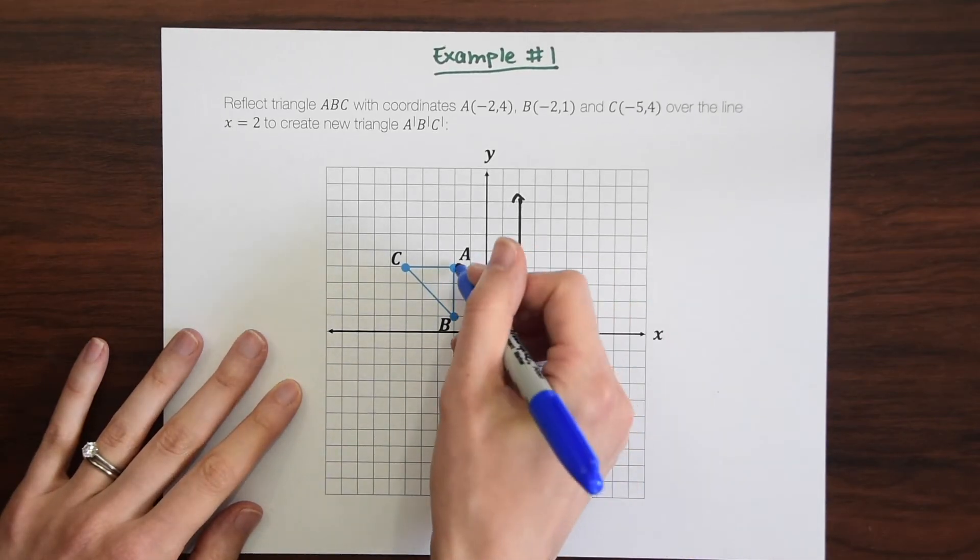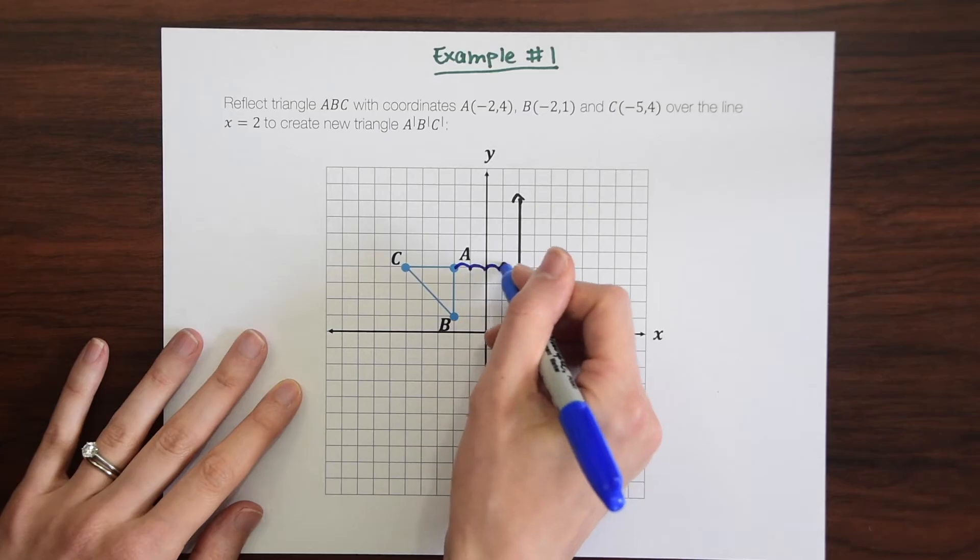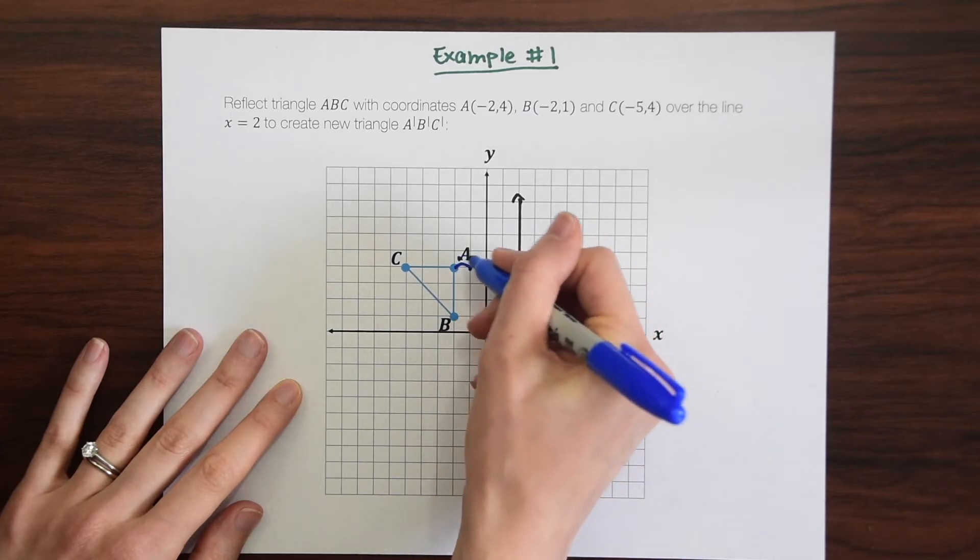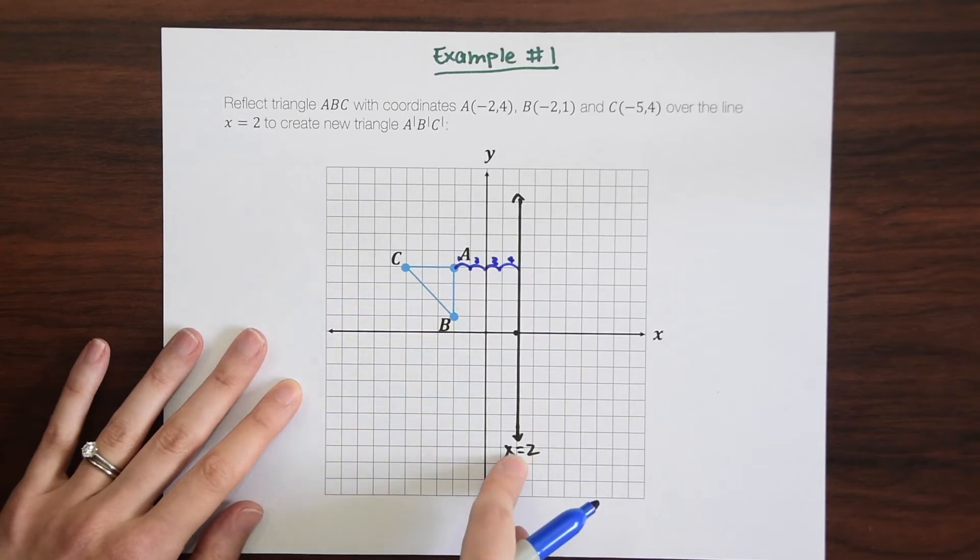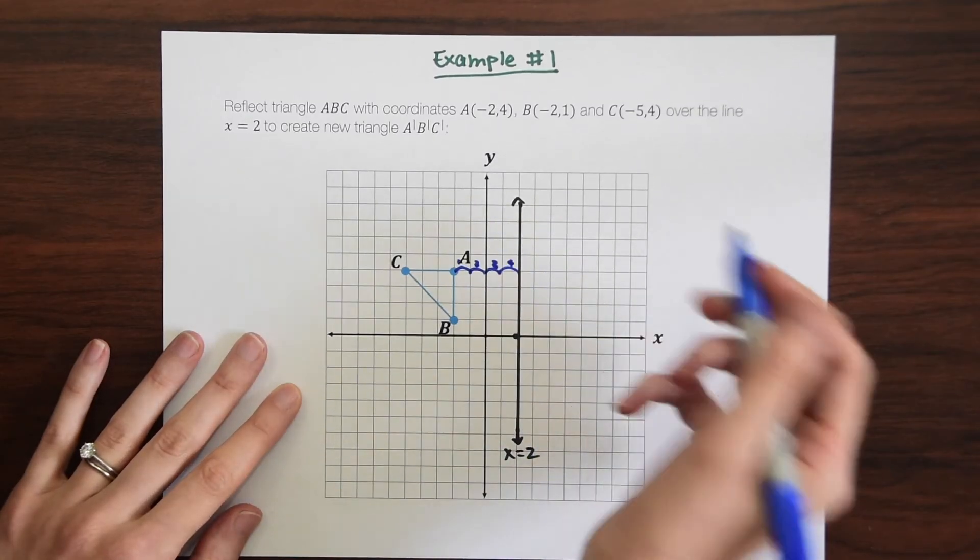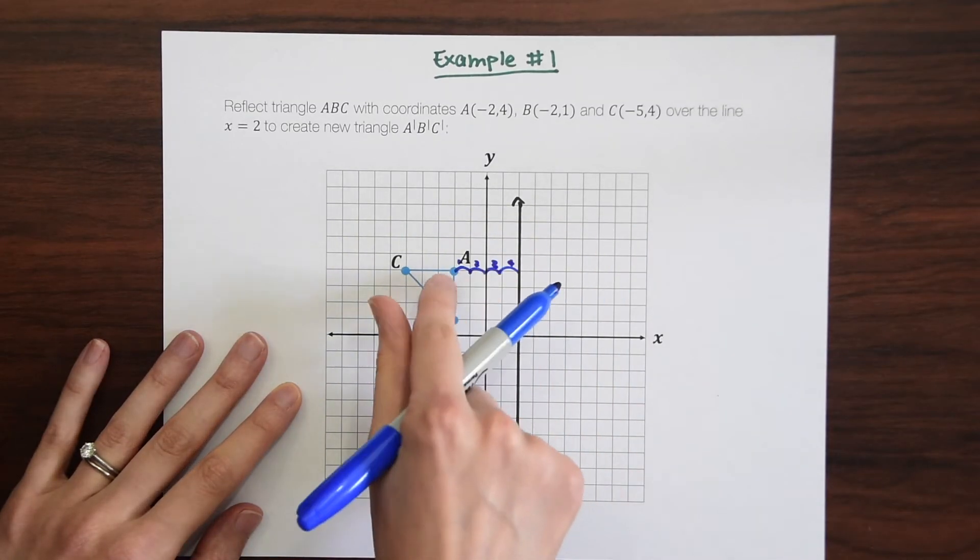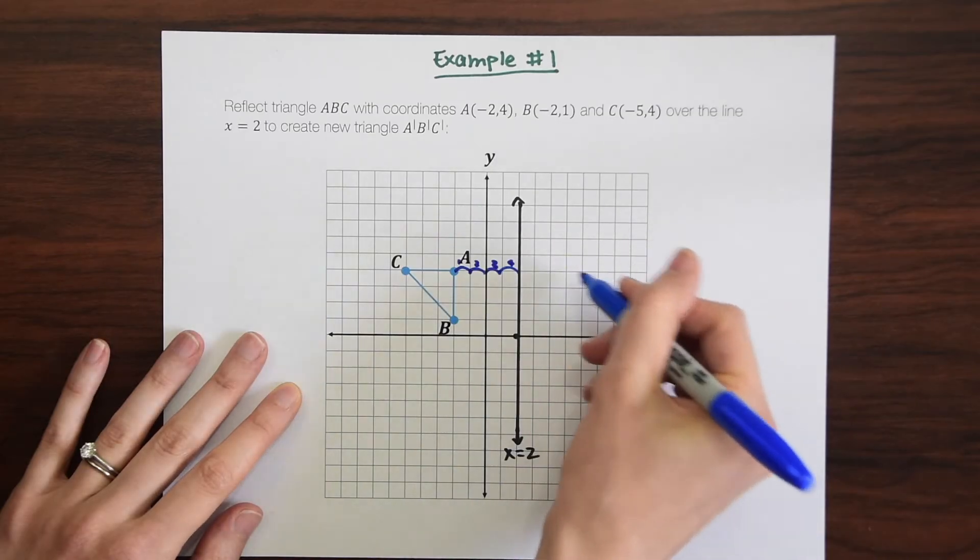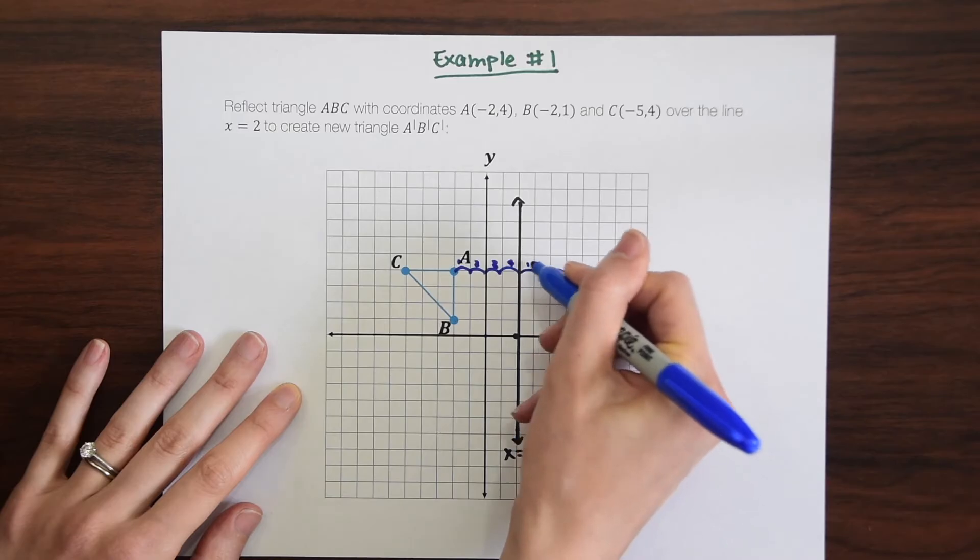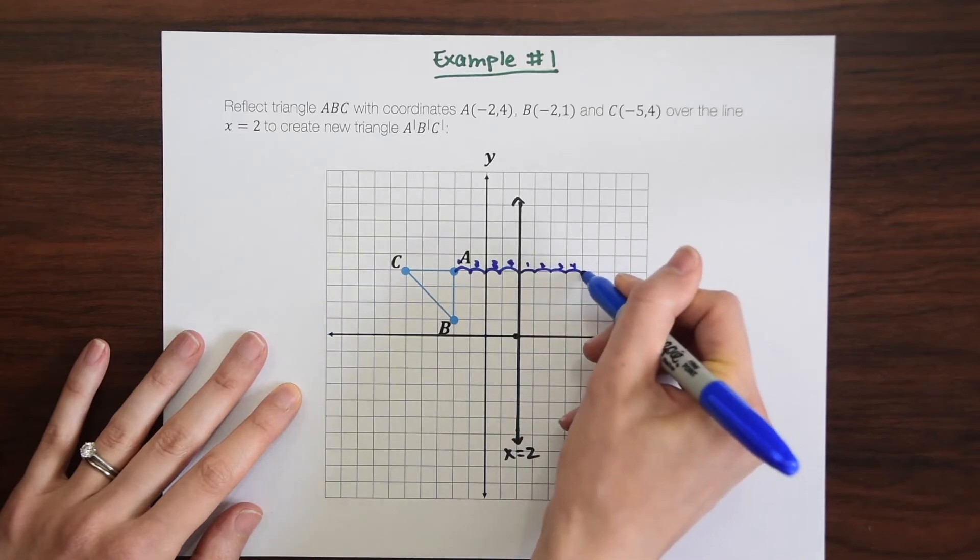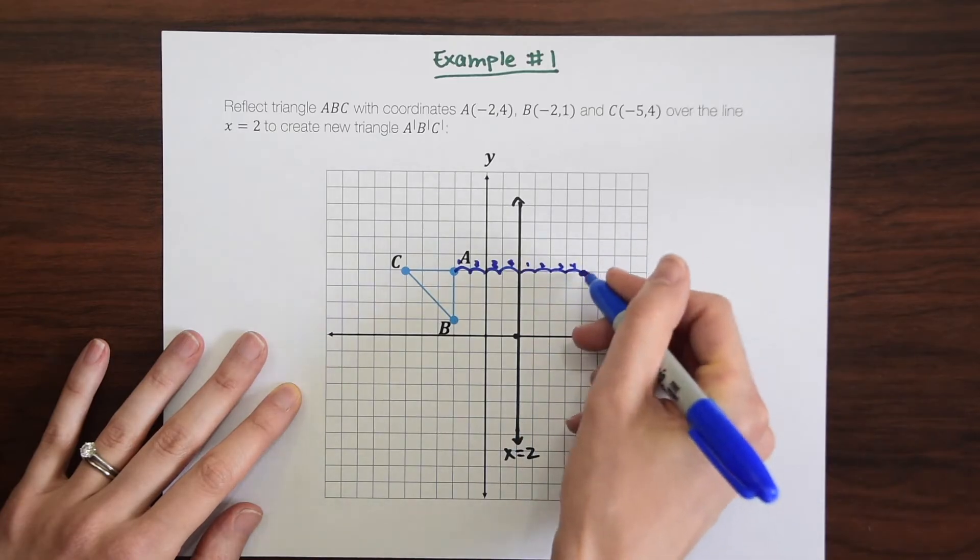So if we look at point A, we can see it's 1, 2, 3, 4 units away, right? 1, 2, 3, 4 units away from our line x equals 2, our reflection line. And now all we want to do to reflect point A is to count 4 units on the other side of this line. So 1, 2, 3, 4. And this is going to be our new point, A prime.